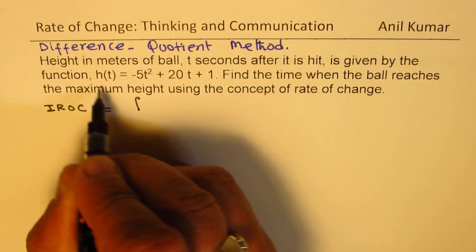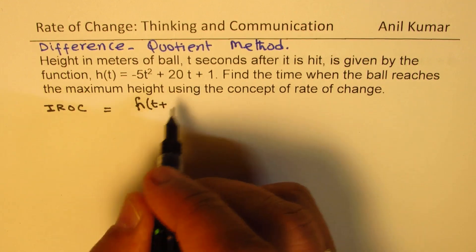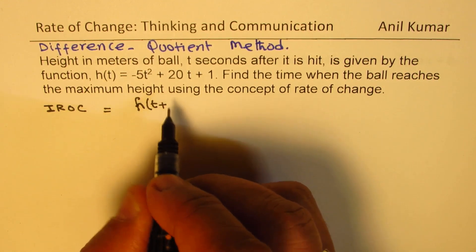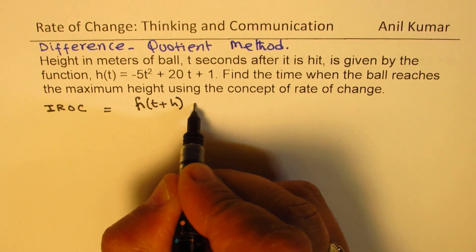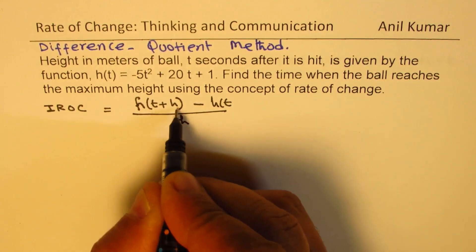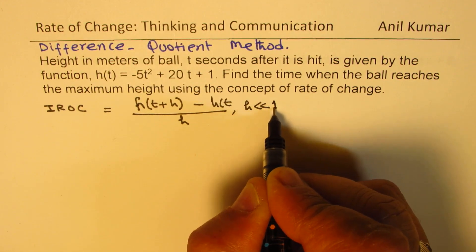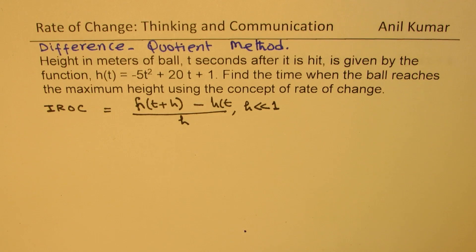The formula will be, in this case the function is height, so we will write h(t plus h) minus h(t) over h. That is what we are going to find where h is very, very small as compared to 1. Clear?